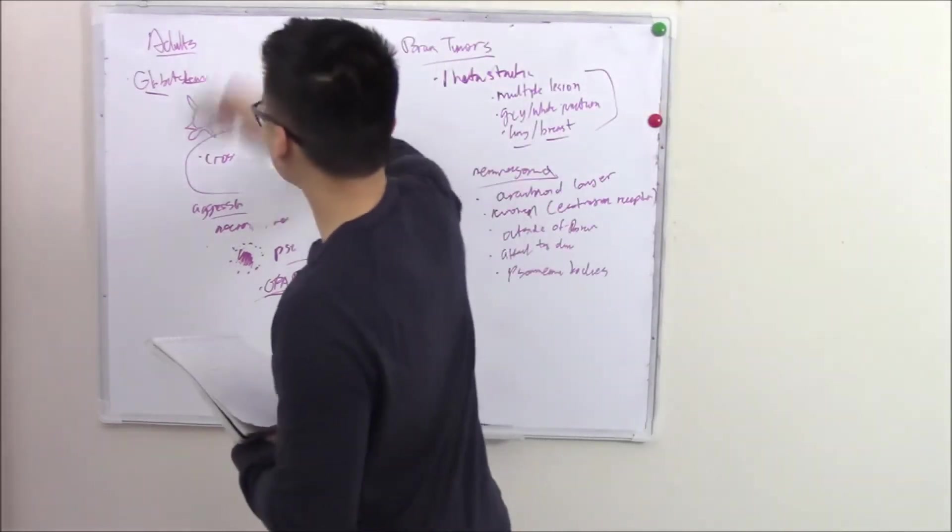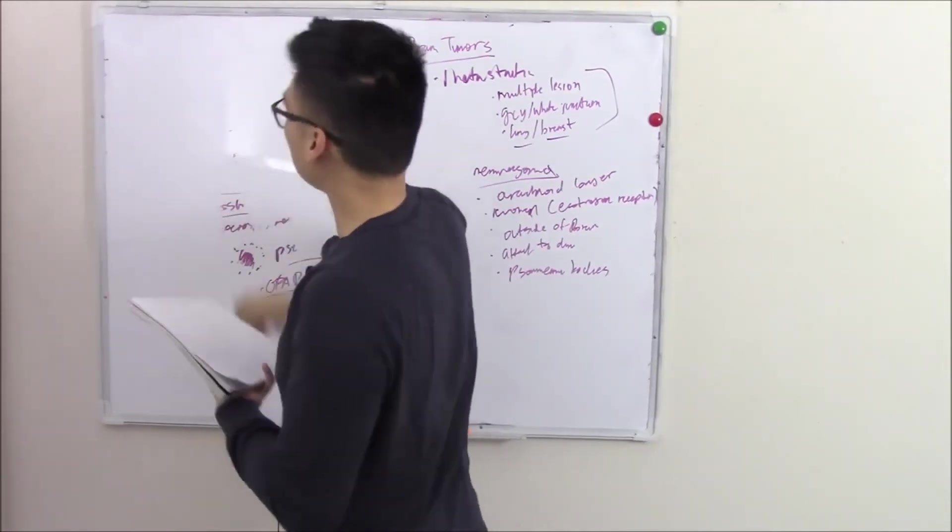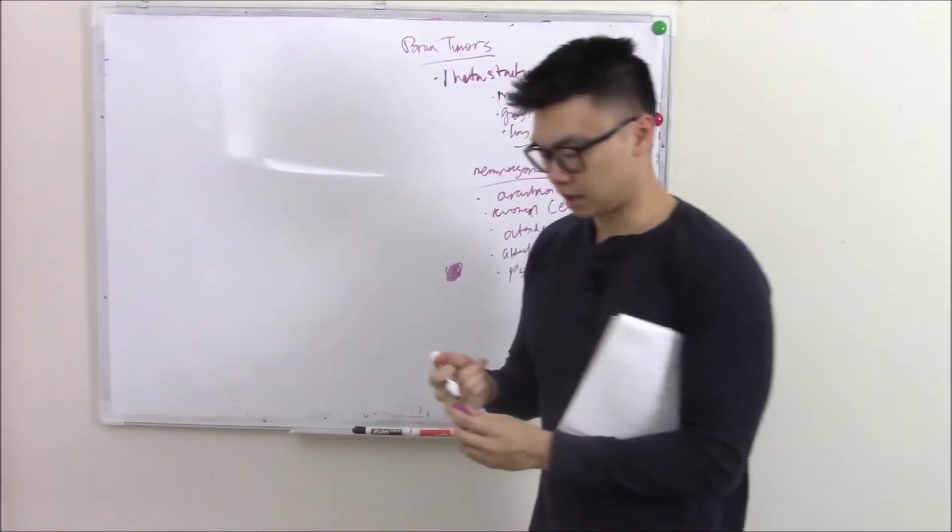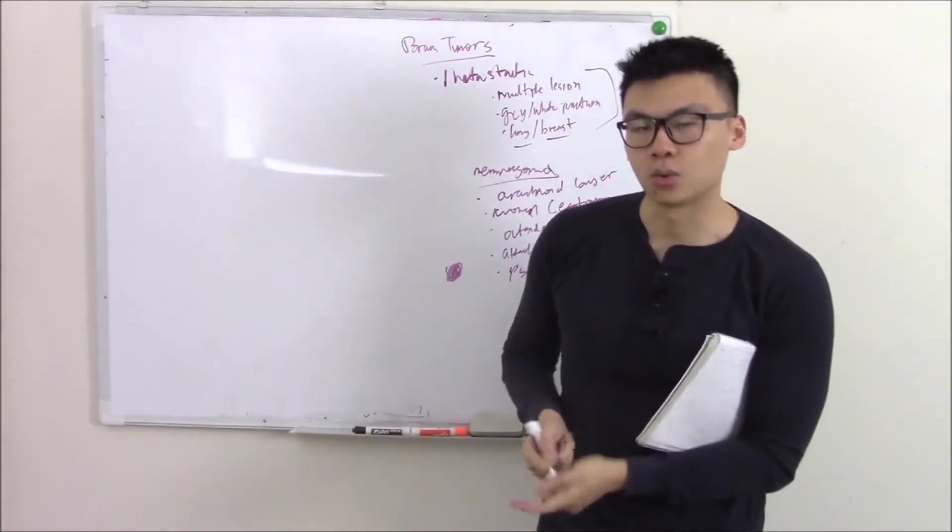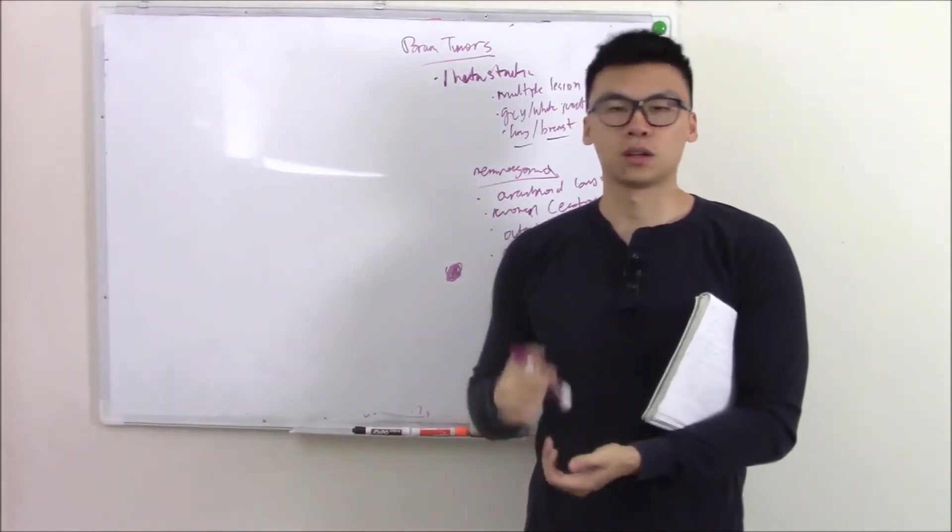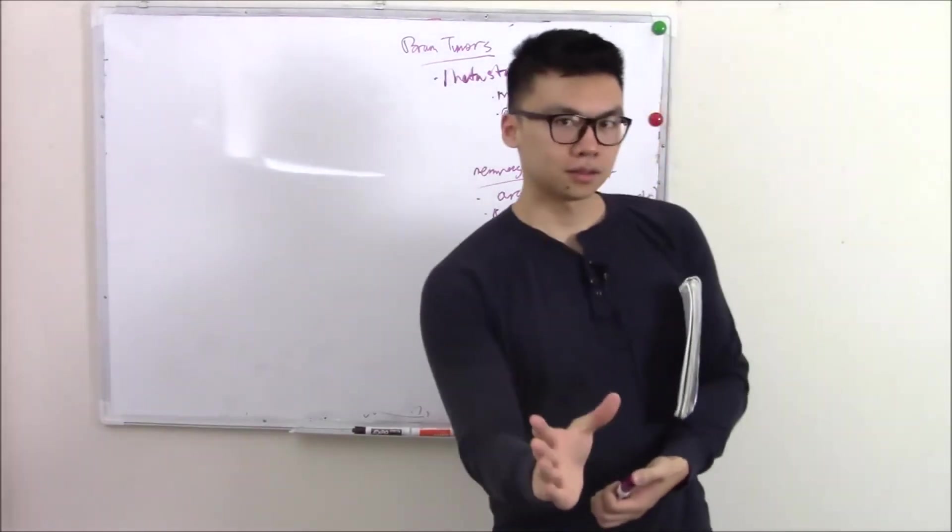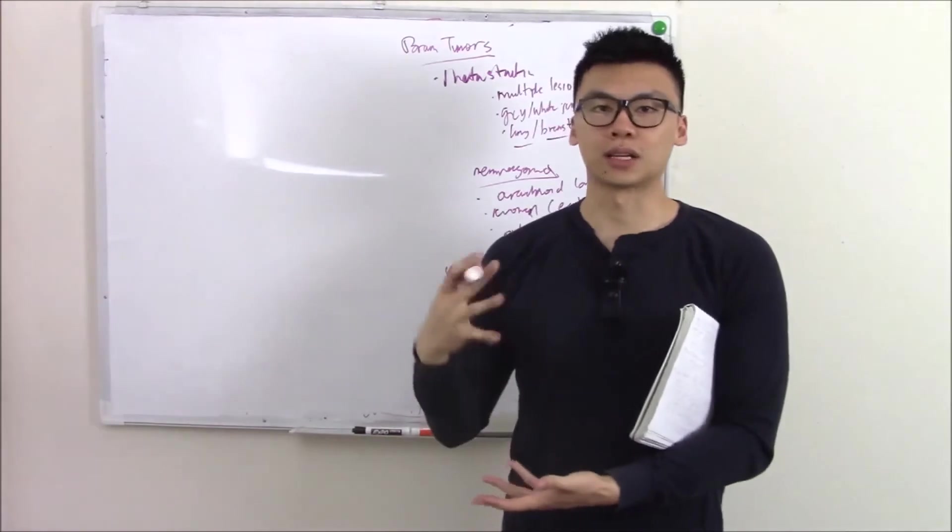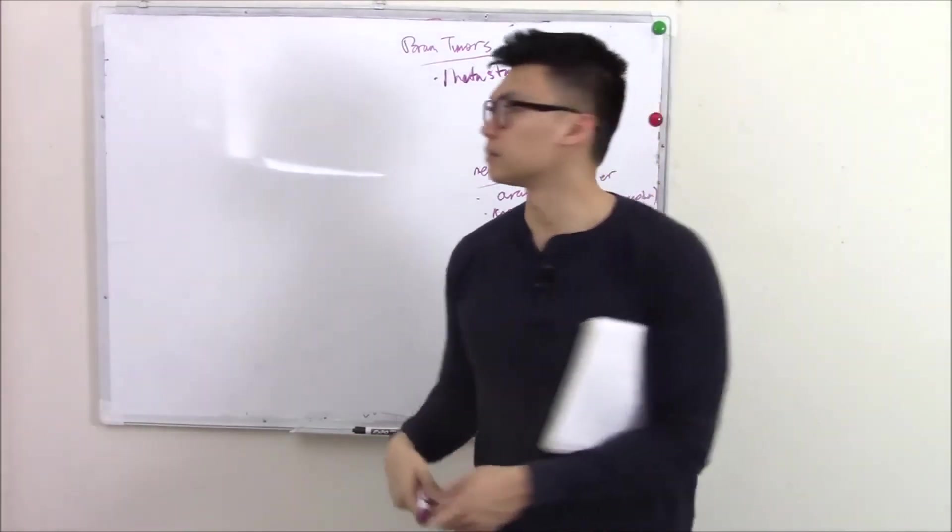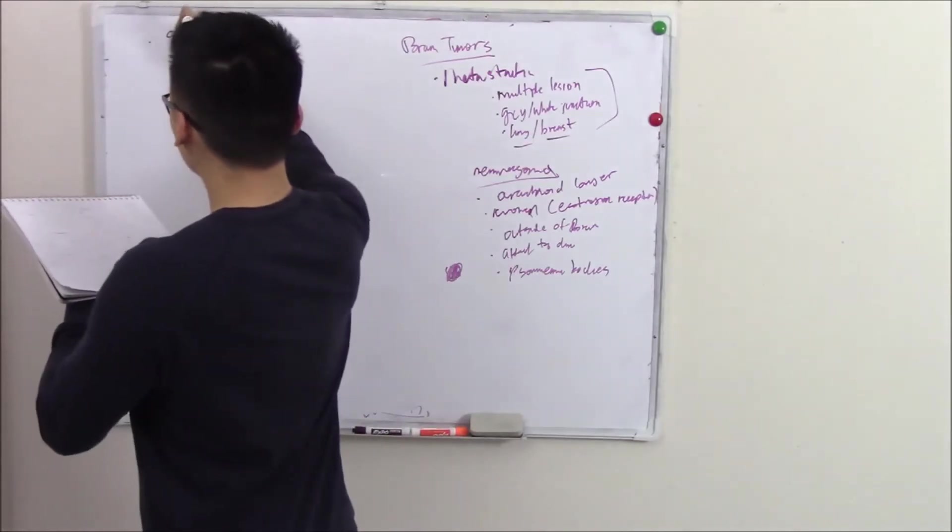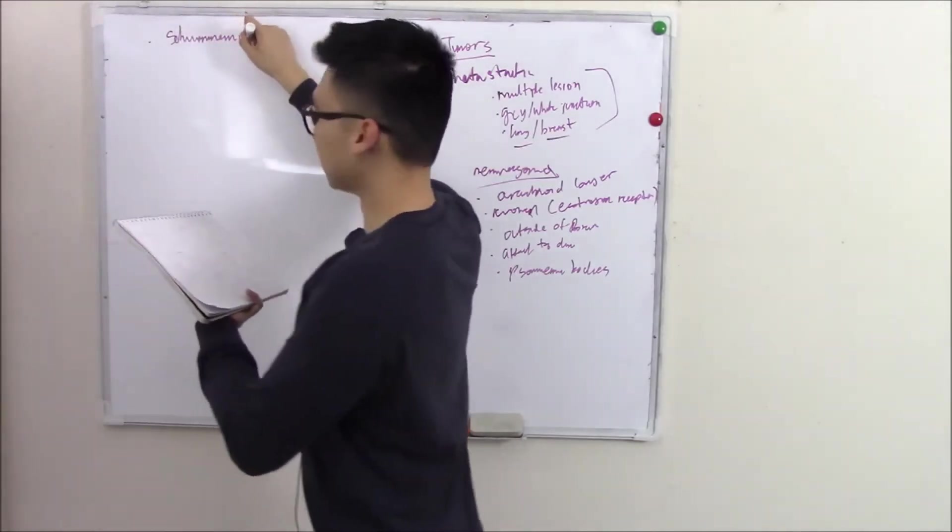Let's move on to our next one. Our next one is going to be dealing with tumors of your cells that make your myelin. What are the cells that make your myelin? Oligodendrocytes? Schwann cells. So Schwann cells help make the myelin of your PNS. Oligodendrocytes help make your myelin of your CNS. Let's talk about Schwann cells first. Tumor of your Schwann cells is a schwannoma.